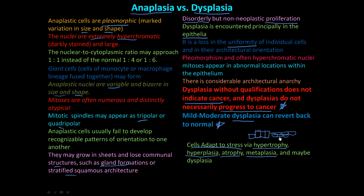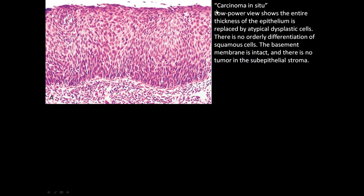Dysplasia can also happen because cells are trying to adapt to stress so they don't die. Dysplasia can mean carcinoma in situ — 'situ' meaning in its place or place of origin. So a carcinoma in situ can be referred to as dysplasia.